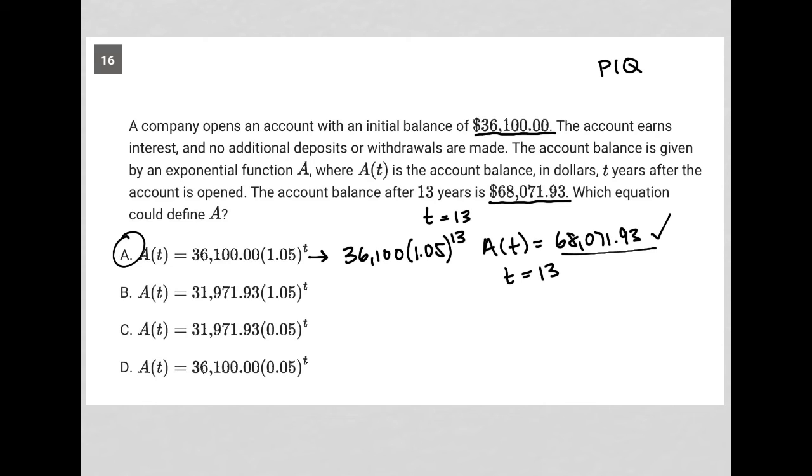If you wanted to try other things, you could, but I think it would be a waste of time because there should not be more than one correct answer. Only one of these answer choices should work in a way in which t equaling 13 leads to an A(t) equaling $68,071.93.